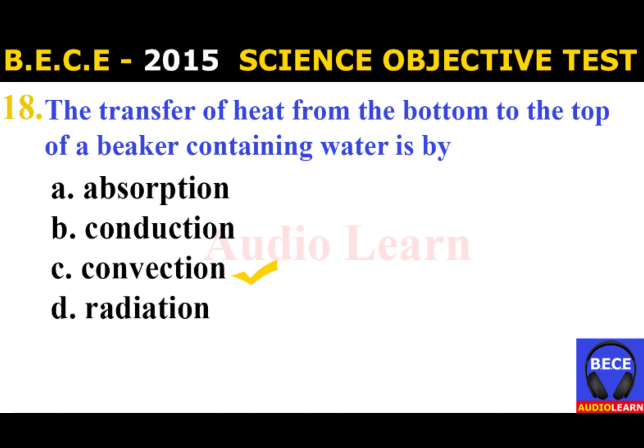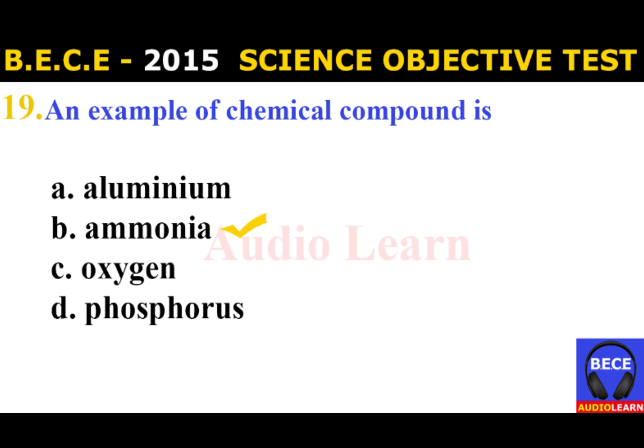Number 18: Transfer of heat from the bottom to the top of a beaker containing water is by A. Absorption, B. Conduction, C. Convection, D. Radiation. The answer is C. Convection. The transfer of heat from the bottom to the top of a beaker containing water is by convection.